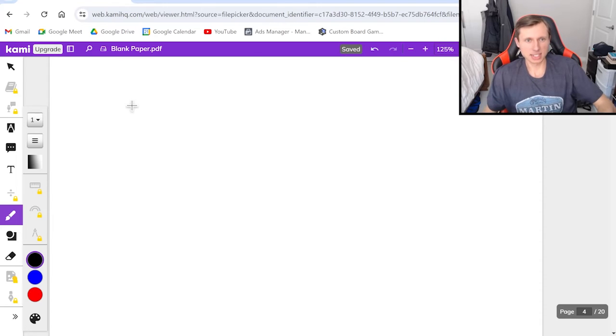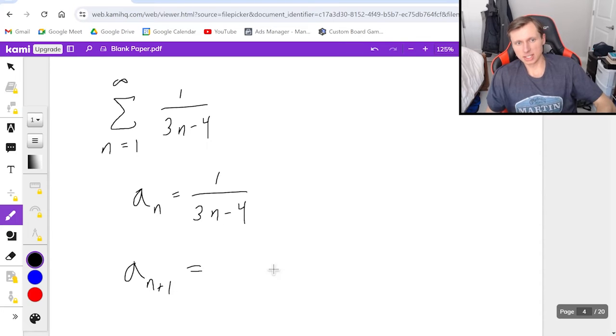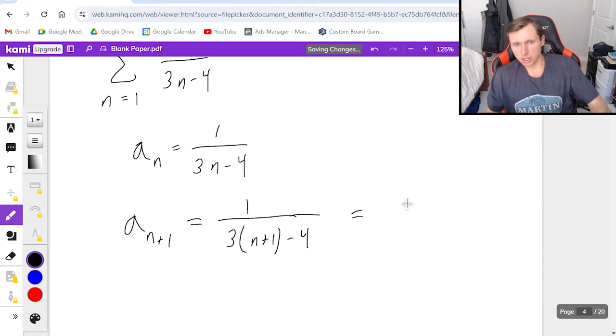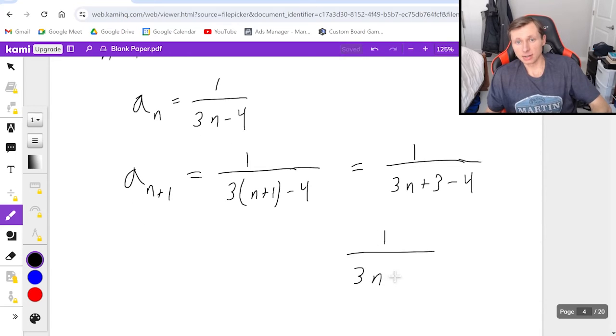Now here's the next example. Series from n equals 1 to infinity of 1 over 3n minus 4. So again, we're going to do the ratio test here. a sub n is 1 over 3n minus 4. a sub n plus 1 is 1 over 3 times n plus 1 minus 4, which we can reduce to 1 over 3n plus 3 minus 4. In other words, 1 over 3n minus 1.